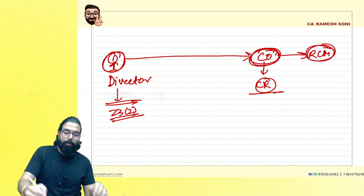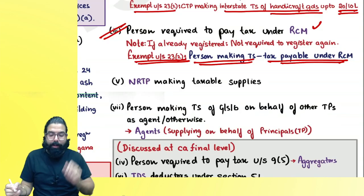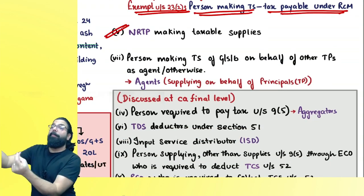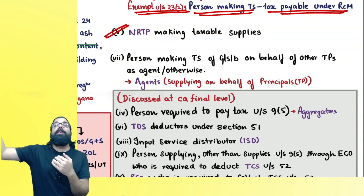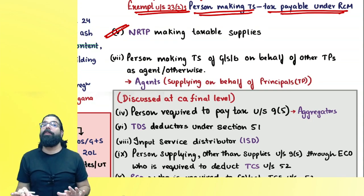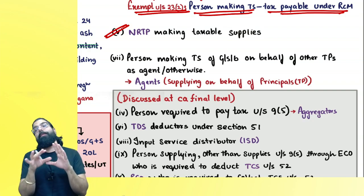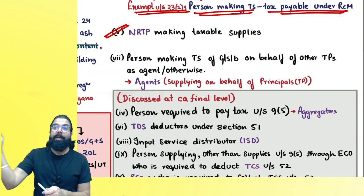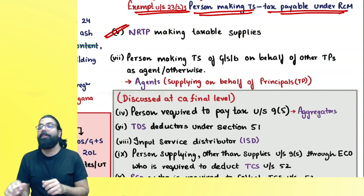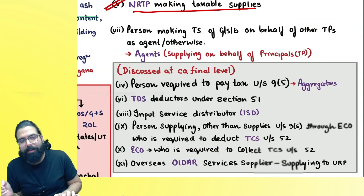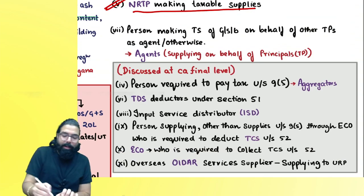Just like CTP, a Non-Resident Taxable Person (NRTP) is someone coming from another country who does not have a fixed place of business in India and does not have a residence in India. Since they might run away, the government mandates compulsory registration for NRTPs making taxable supplies.